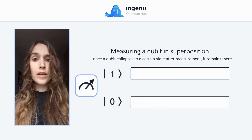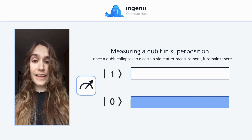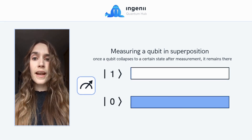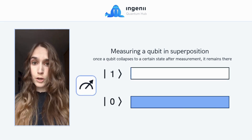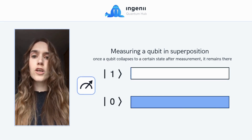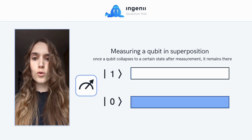For example, if you measure a qubit and get 0, any further measurements of that same qubit will continue to show 0.